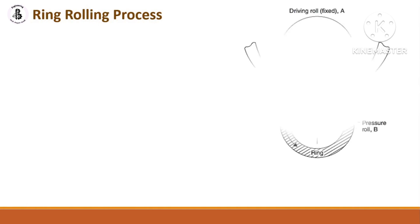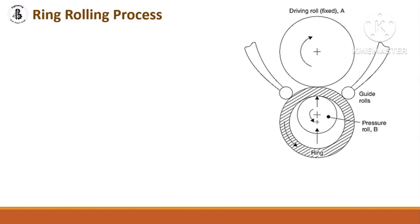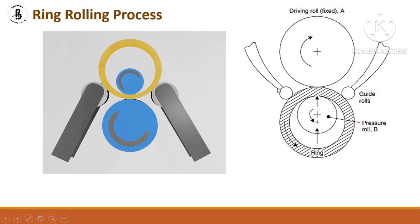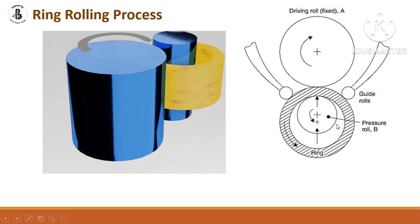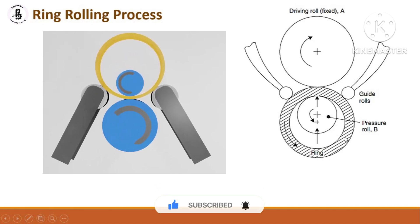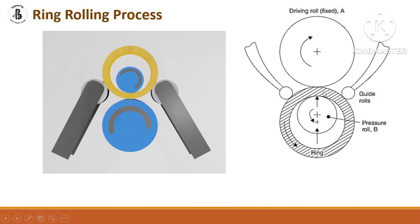Just you can see the basic setup for the ring rolling process. In that case, there is a driving roll which is fixed, and another two will be considered as guide rolls. This is the pressure roll that will be used to make pressure to create ring rolls. This hat section or this roll will be considered as the ring which will be manufactured with the help of the rolling process.